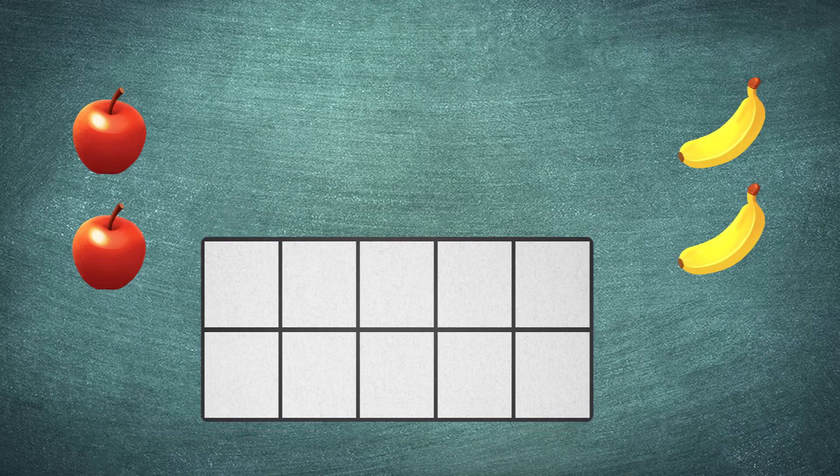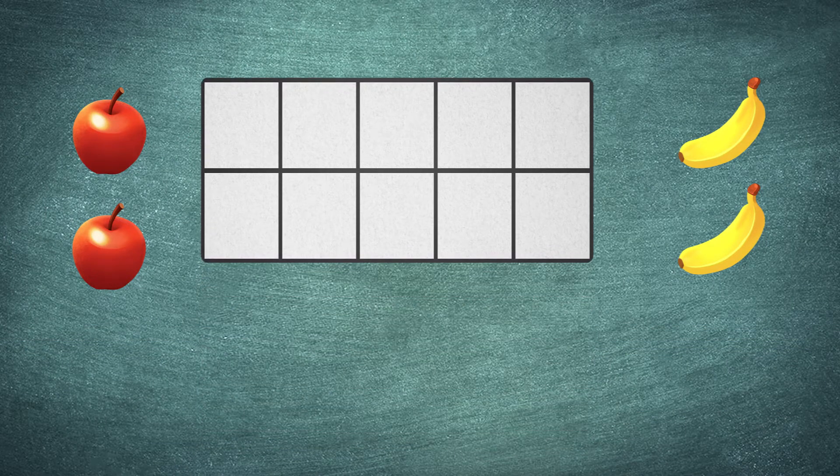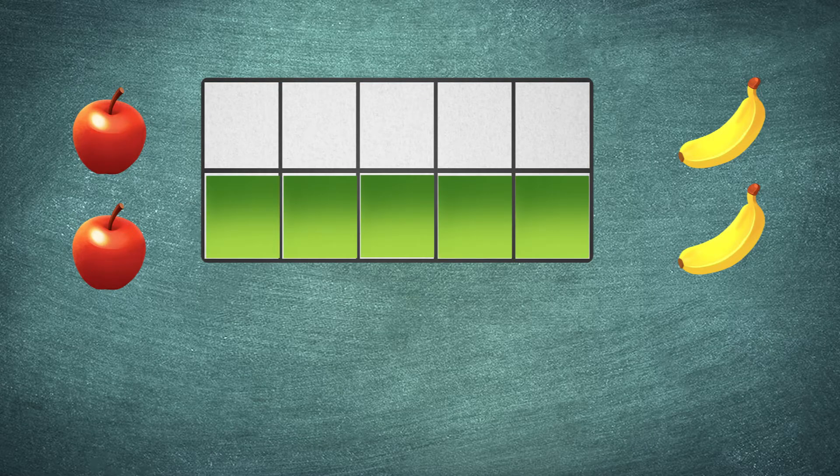Let's count these apples and bananas by placing them in two rows. One for the apples, the other for the bananas.